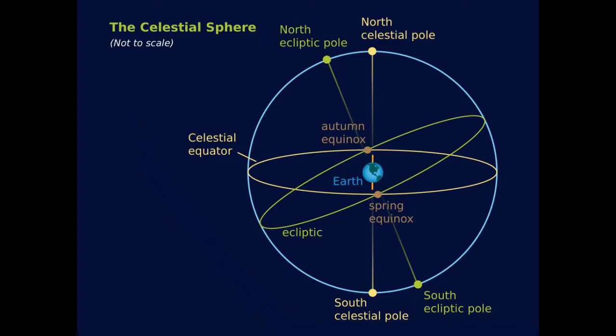Imagine the Earth's equator, lines of latitude and longitude projected outwards onto the celestial sphere. The celestial equator lies directly above the Earth's equator and the north and south celestial poles are above the Earth's north and south poles.